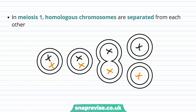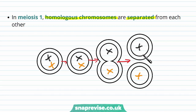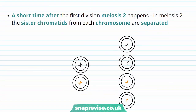In meiosis 1, the cell divides and splits into two during various different stages, similar to the stages found in mitosis, and the homologous chromosomes — those that line up with the same genes — become separated from each other. The copies from dad go into one cell and the copies from mum go into the other cell. Shortly after, this division is followed by meiosis 2, where the sister chromatids are separated from each other in the next phase.